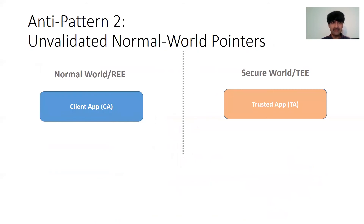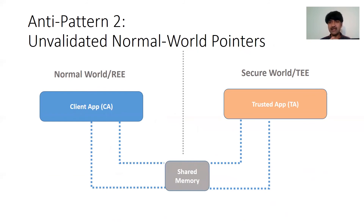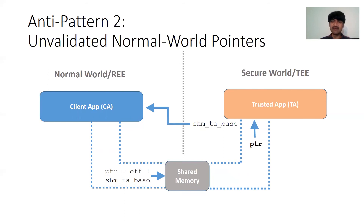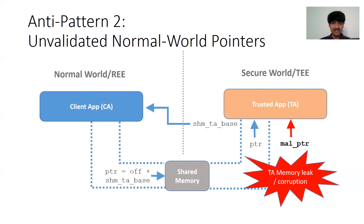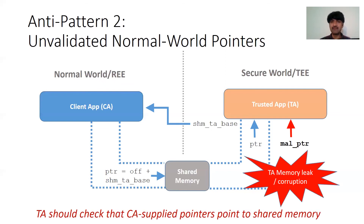The second anti-pattern was an unvalidated normal world pointer. The TA and CA run in separate address spaces. In some TZOS implementations, they communicate through shared memory mapped into both address spaces. By design, certain OSes require the shared memory mapping address to be passed back to the CA, so the CA can construct pointers into the shared memory that the TA can use directly. However, malicious clients are not constrained to give a pointer within the shared memory — they could give a pointer anywhere within the TA's address space, leading to integrity and confidentiality violations. The TA should check that CA-supplied pointers point to shared memory.